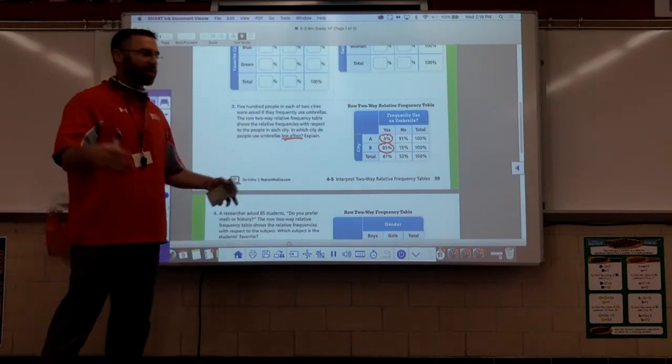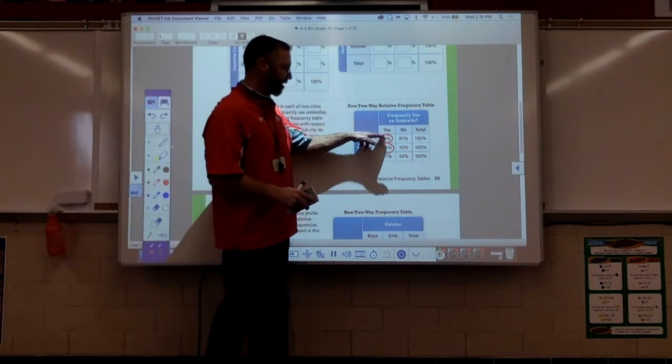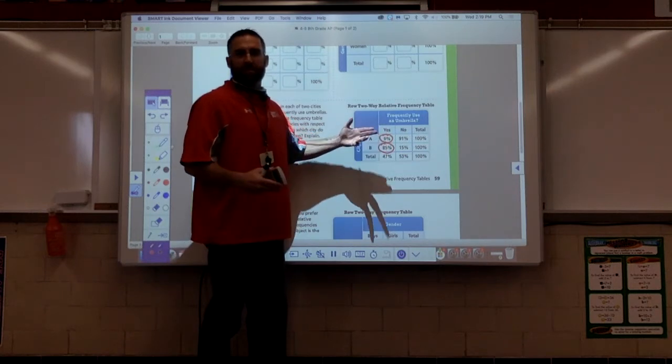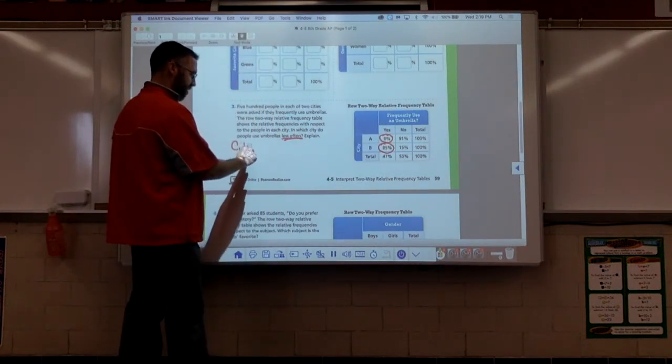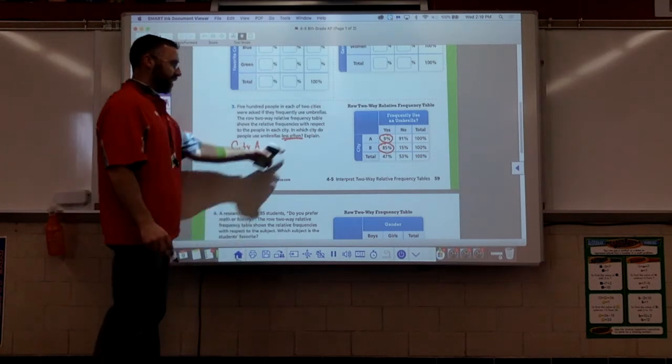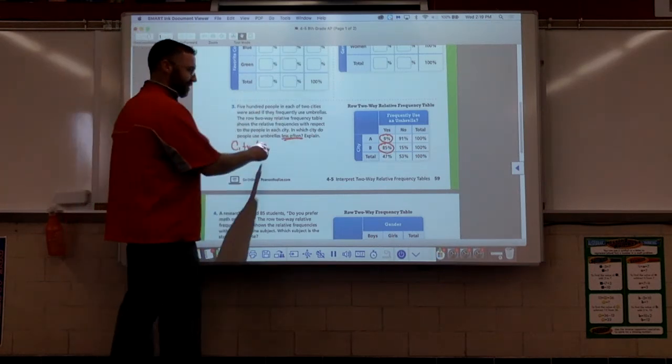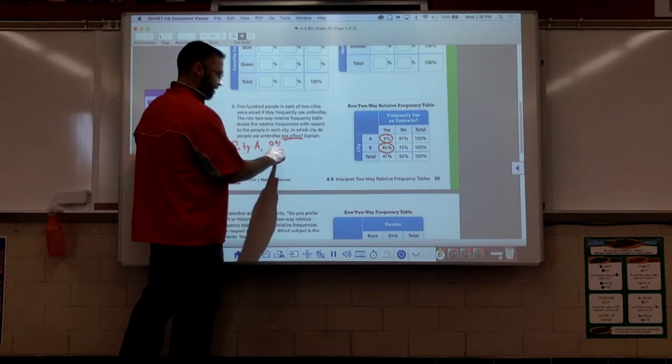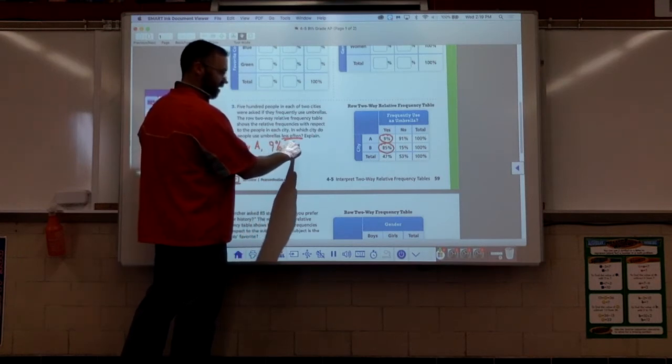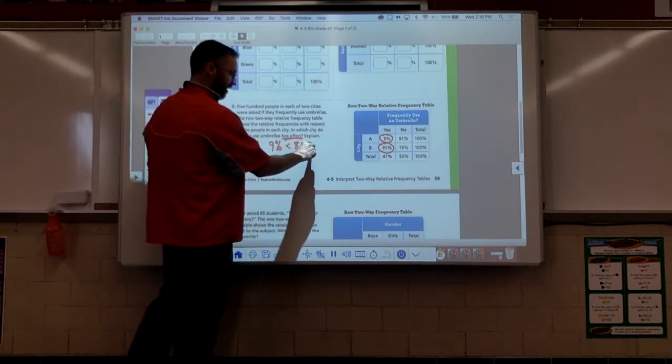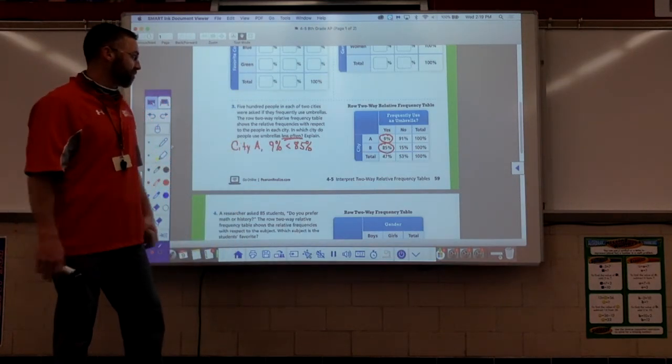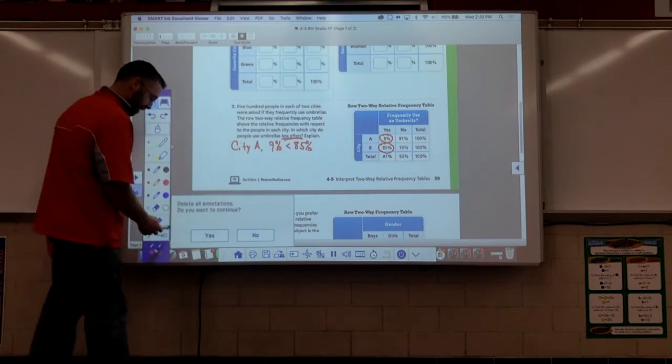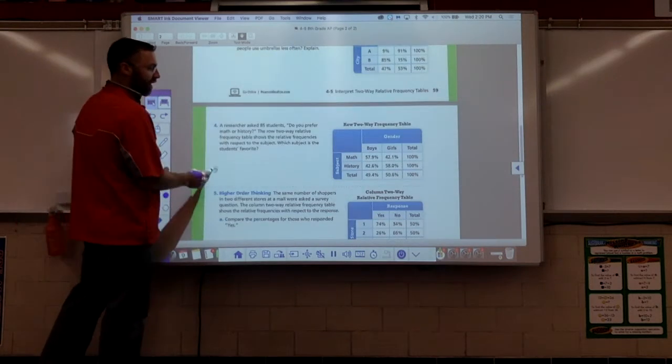What about city B? City B frequently use umbrella, they use it 85% of the time. So when do they use them less often? That's pretty easy to compare. That's why we like these relative frequency tables, it's real easy to compare these values. Which one's less? City A. Explain. I would just basically say 9% is less than 85%. Want to make a better explanation than that Mr. Freaky? Nope. I don't need it.